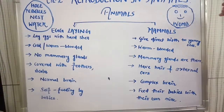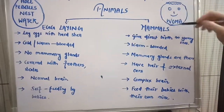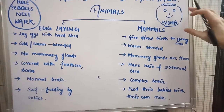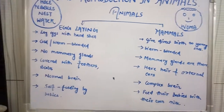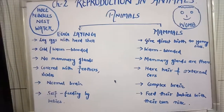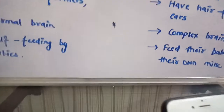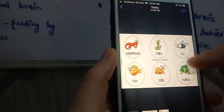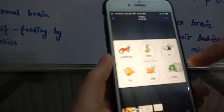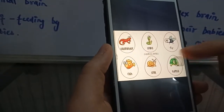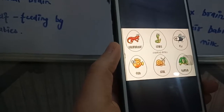Eggs can be found in a hole, in pebbles, in a nest, or in water, according to the animal. A mammal's baby is found inside its womb — they will not lay eggs at any cost. These are your egg-laying animals: those who lay eggs.